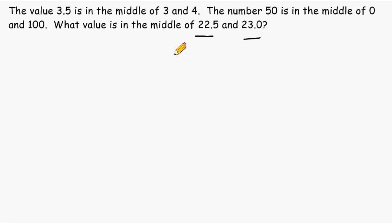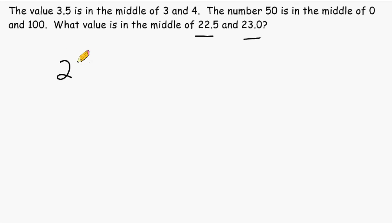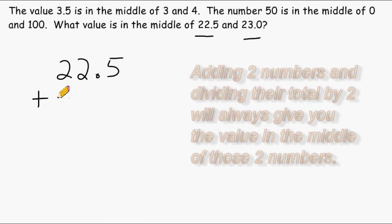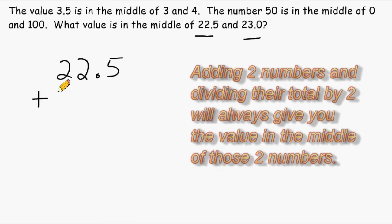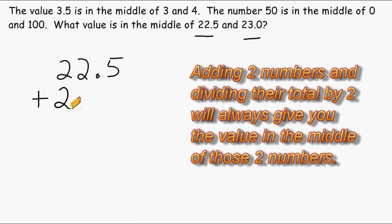But sometimes people have a hard time figuring out what is in the middle of two other given numbers. One strategy that you can use to find the middle of any two given numbers is to take those two numbers and add them together, and after you get the sum of those numbers, divide it by 2, and that will give you the value that is right in the middle of those two numbers.